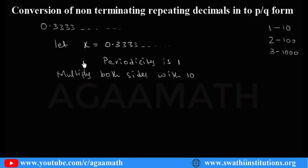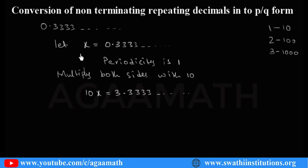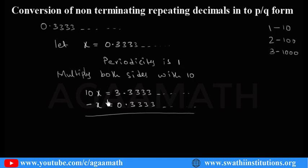Multiply both sides with 10. So 10x is also multiplied — that is 10x. When you multiply this decimal number with 10, it will be written as 3.3333 and so on. From this, 10x subtract x equals 0.3333 and so on. When you subtract, you get 9x. So 3.3333 minus 0.3333 leaves only 3, so x equals 3 by 9.